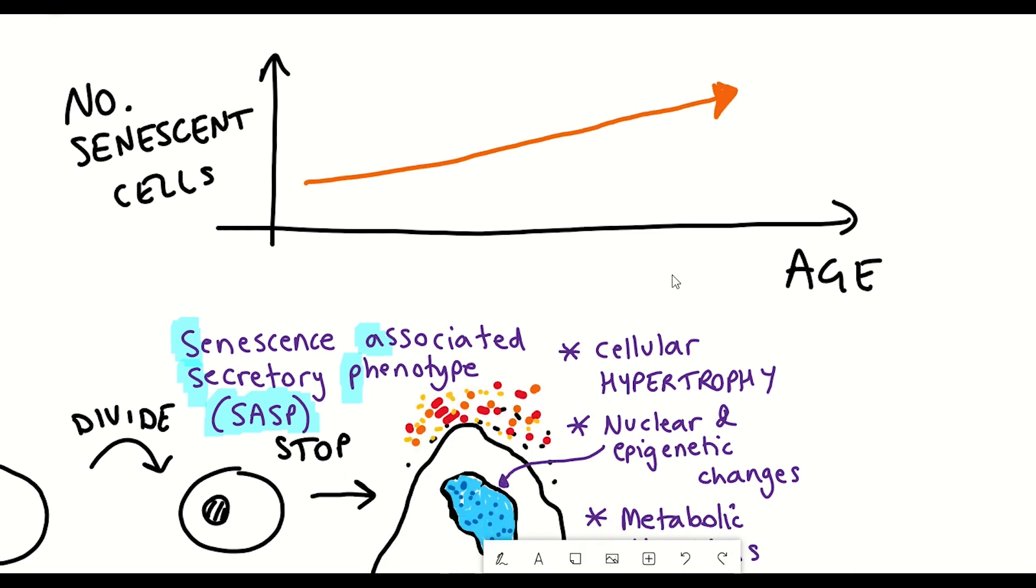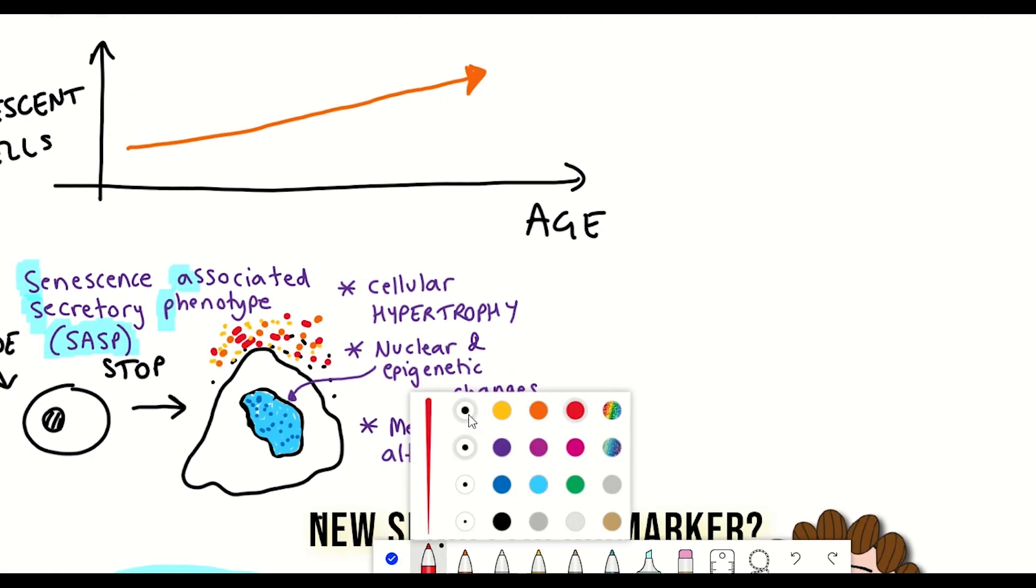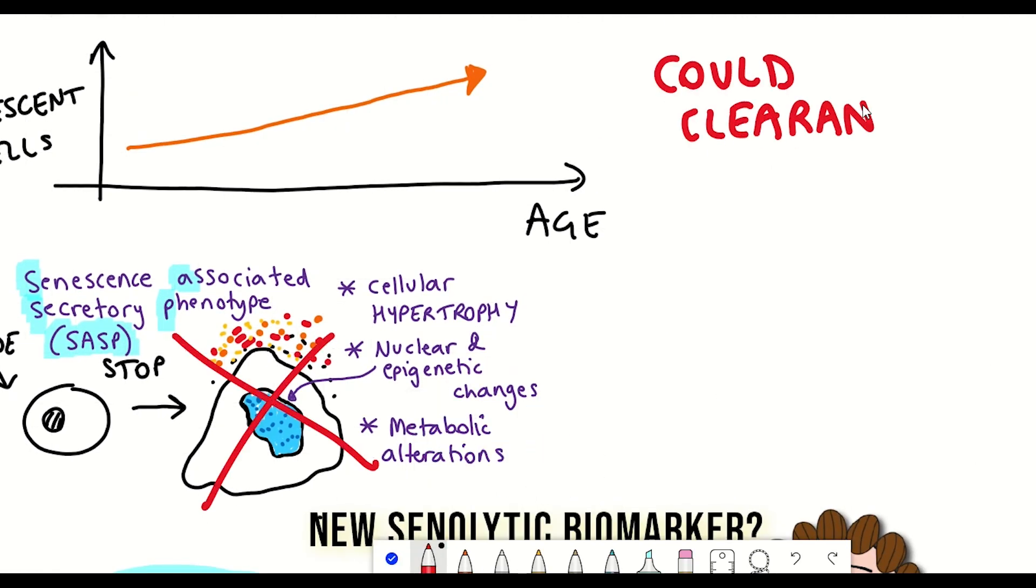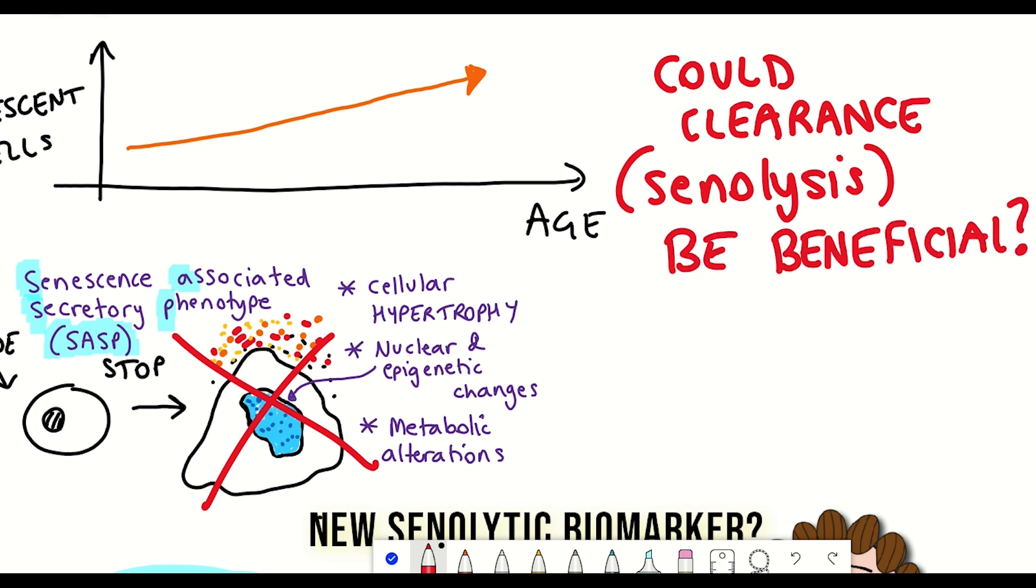And so if senescent cells can drive chronic inflammation and have deleterious pro-aging effects, it was hypothesized that clearing senescent cells in a process known as senolysis using so-called senolytics, which kill senescent cells, may have benefits for reducing chronic inflammation and help to reduce the aging process.